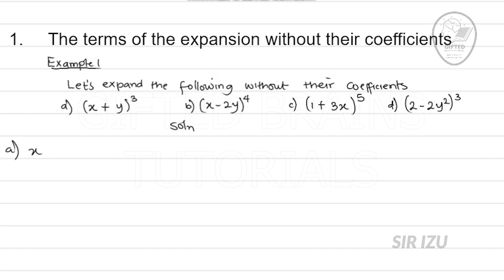Let's take the first one, which is (a): x plus y all raised to power 3. Take note of how we do this. The power here — 3 — tells you the n value. So n is 3 for question (a), n is 4 for (b), n is 5 for (c), and so on. To get the terms without their coefficients, here is how we do it.